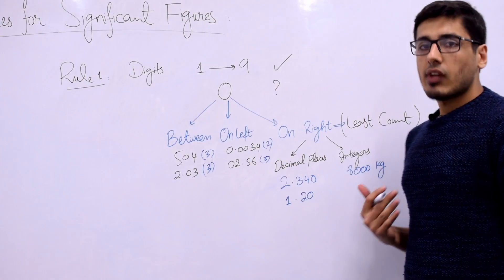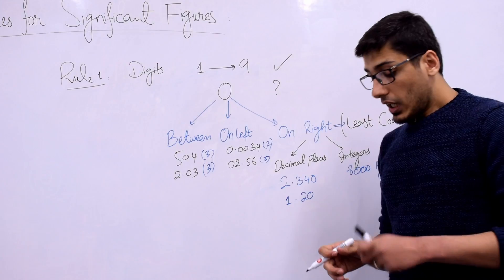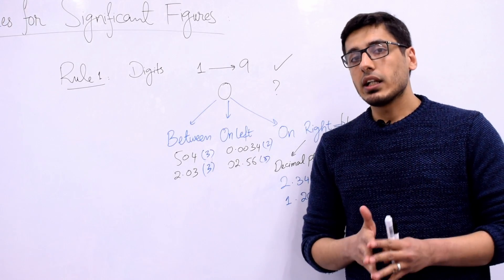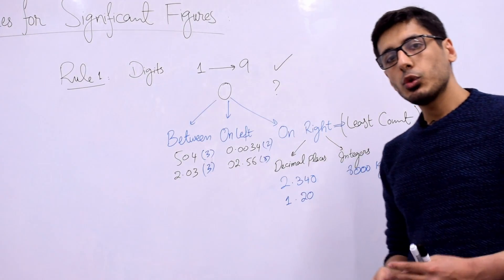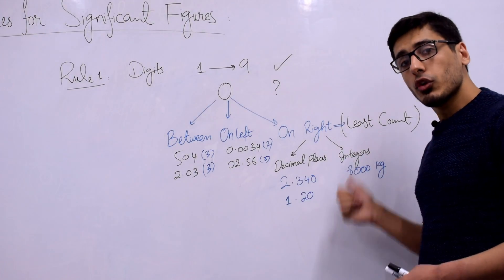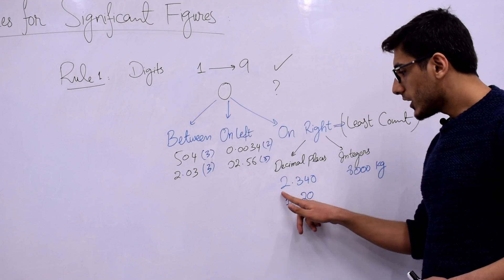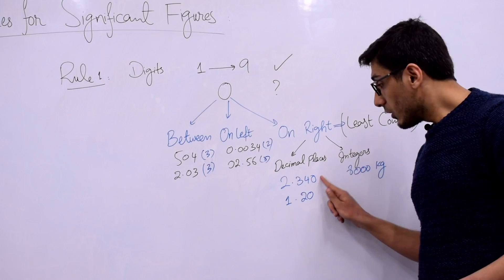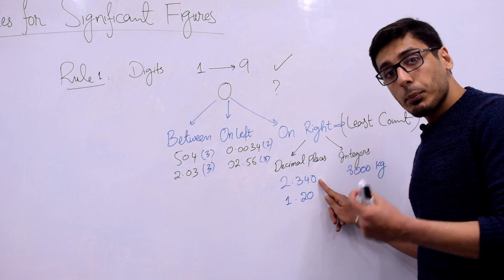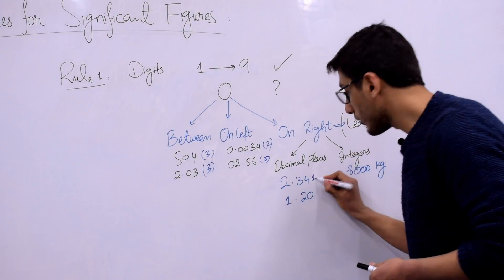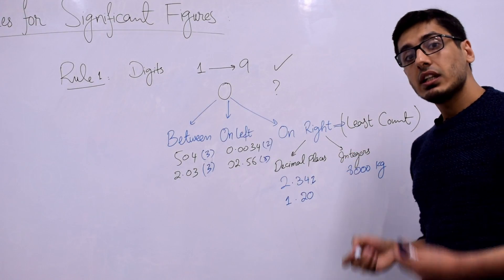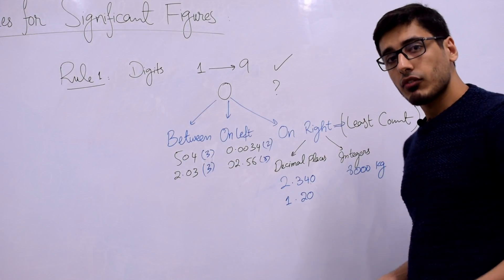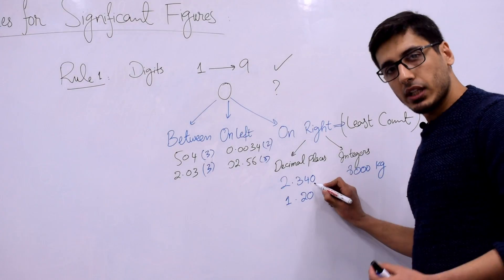If zero comes on the right side of other significant figures, it gets a little tricky — and this is very confusing for many students. You need to understand the concept of least count. For zeros on the right, we look at two cases: one with decimal places and one with integers. For decimal places, for example, 2.340 — this zero on the right means the least count goes to the thousandths place. It means you can actually measure to that level, for example 2.341 or 2.342. So that zero must not be neglected; it remains a significant figure. The total number of significant figures is 4.